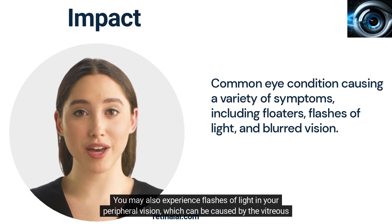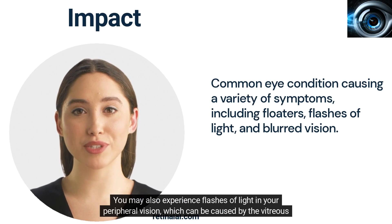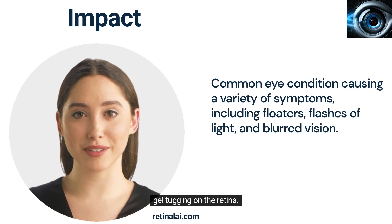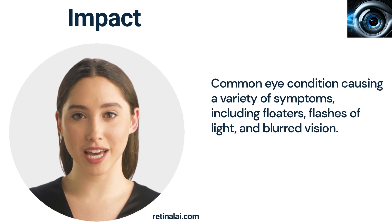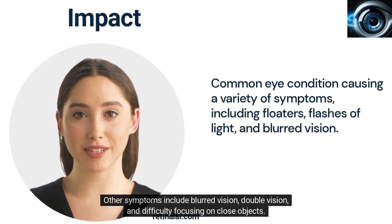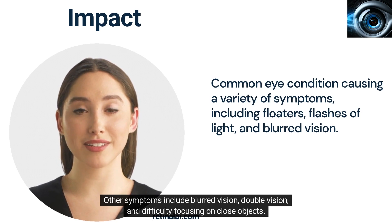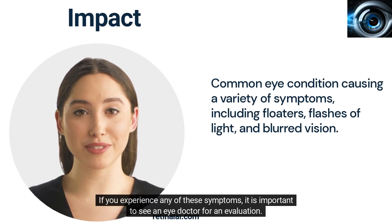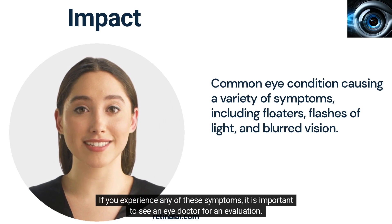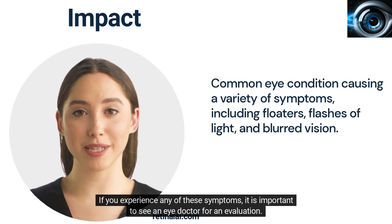You may also experience flashes of light in your peripheral vision, which can be caused by the vitreous gel tugging on the retina. Other symptoms include blurred vision, double vision, and difficulty focusing on close objects. If you experience any of these symptoms, it is important to see an eye doctor for an evaluation.